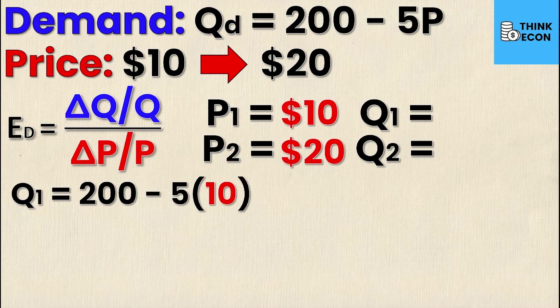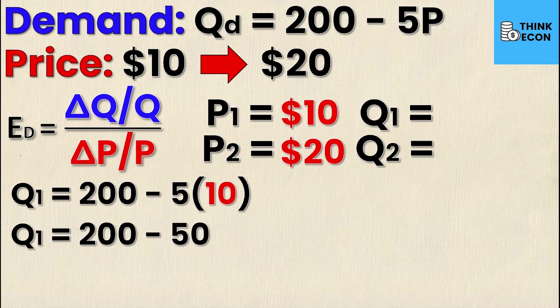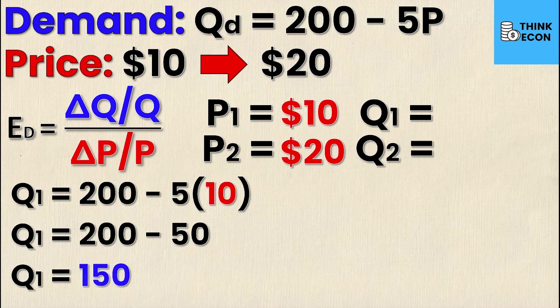So let's start with Q1. We're going to substitute it into the demand equation. That's going to give us Q1 equals 200 minus 5 times 10. Again, 10 is just P1. Simplifying this further we get Q1 equals 200 minus 50, and then finally we can derive that Q1 must equal 150.